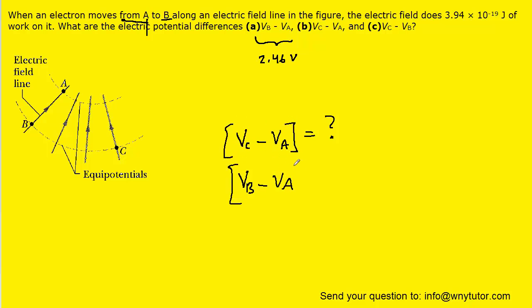In other words, this value is the same as this value, again, because point C and point B are on the same equipotential line, making their potentials the same. But we already figured out VB minus VA. That was 2.46 volts. So that means that VC minus VA is also 2.46 volts. So no additional calculation is required.